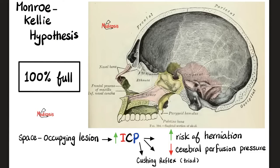Next, the Monroe-Kelly hypothesis. It states that your skull is like a box that is 100% full — packed, stacked, and stuffed, with not a single inch of empty space. Therefore, anything that appears within the skull — for example, a tumor — must raise the intracranial pressure, otherwise herniation will occur. A space-occupying lesion such as a tumor or brain abscess can raise the intracranial pressure. Raising intracranial pressure increases the risk of herniation because the high pressure causes pushing — part of the brain is pushed outside. I have a special video on brain herniation in my neurology playlist.